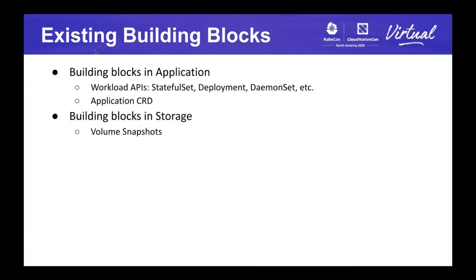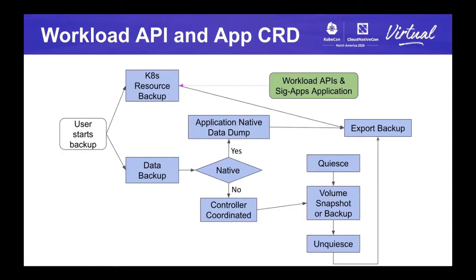What are the existing building blocks at this moment? From the applications perspective, we have workload APIs — StatefulSet, Deployment, etc. — and application CRDs. Those are high-level constructs that group a set of Kubernetes resources together to form your application. In the storage layer, we have volume snapshots, which are built on top of PVC and can take a point-in-time snapshot of a volume. The workload API and the SIG Apps application CRD can fit into the Kubernetes resource backup process, providing a convenient way to group Kubernetes resources together.